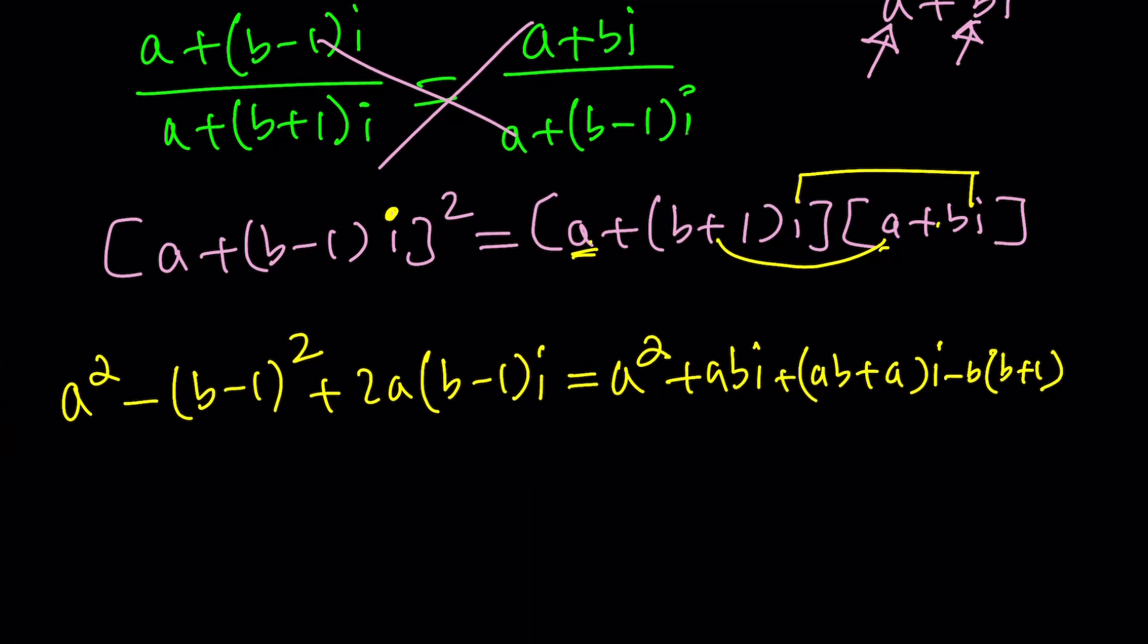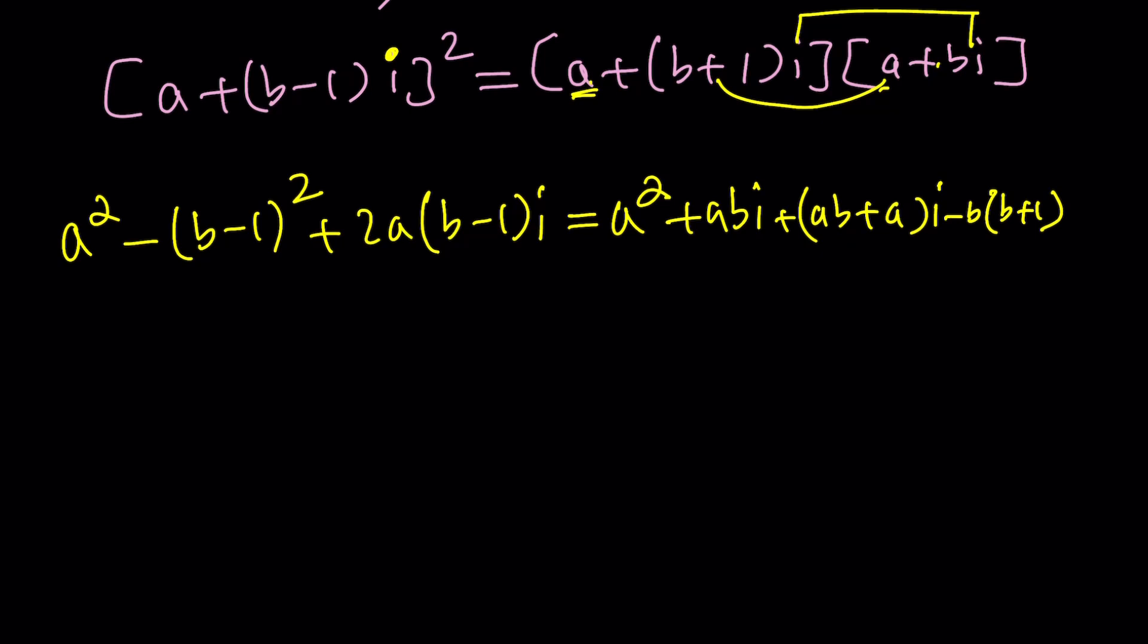Okay, here we go. Now in this expression, we're going to simplify things. First of all, a squared cancels out. And then what else? I have minus b minus 1 squared. And here, I can write this as 2ab minus 2a multiplied by i. On the right-hand side, I have the ab and ab plus a, giving me 2ab plus a multiplied by i. And then finally, minus b squared plus b. But I can still write it as a product. Great.